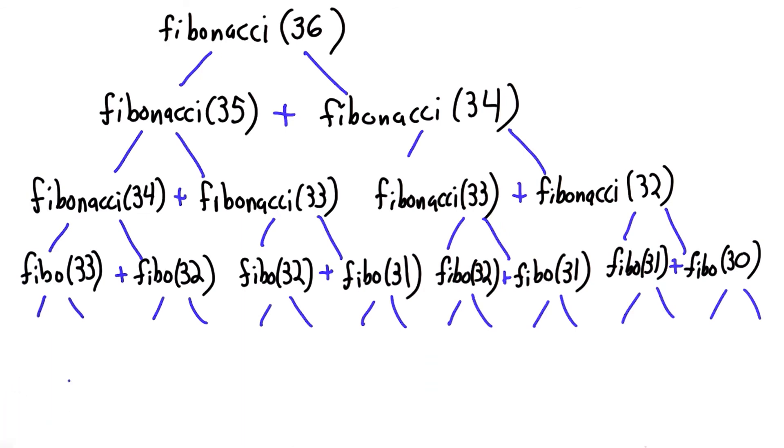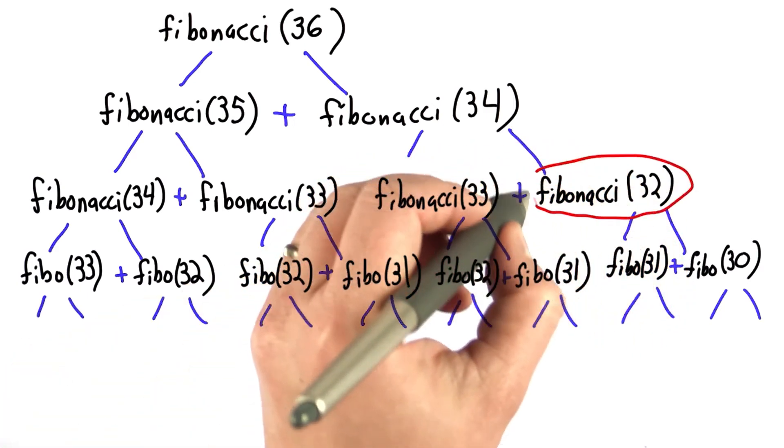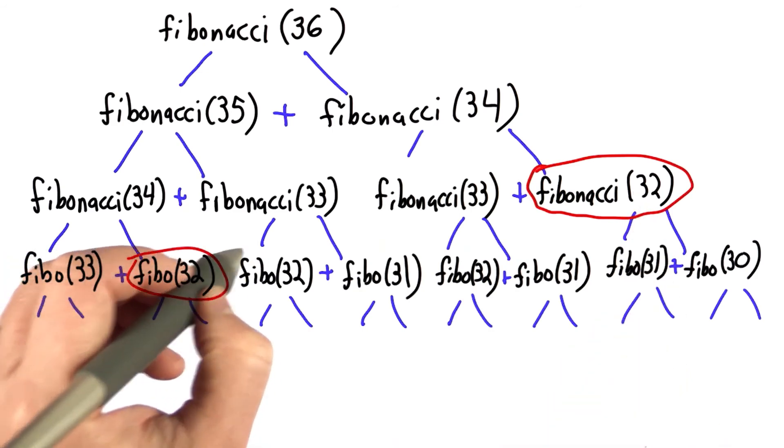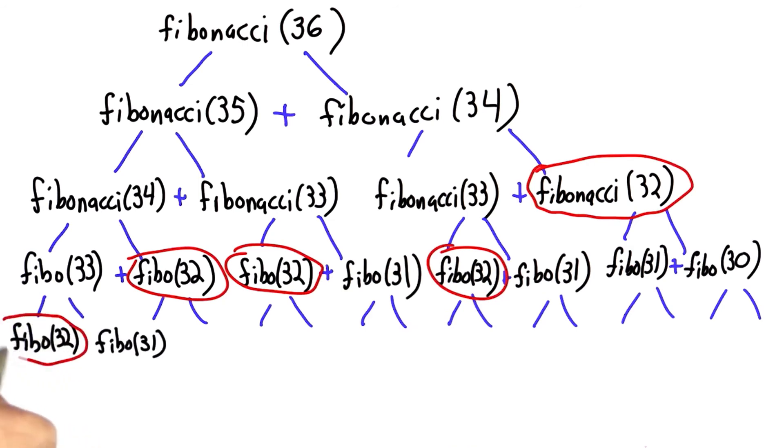If we look at the number of times we have to evaluate Fibonacci 32, let's pick that one. We have to evaluate once here, once here, once here, once here, and one more time. So we need to evaluate Fibonacci 32 1, 2, 3, 4, 5 times.